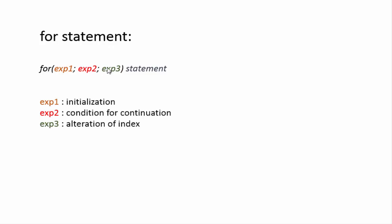After executing the statement, control comes back to expression 3, which alters the index set in expression 1. This helps move to the next pass, where the same procedure is repeated. The loop executes as long as the condition in expression 2 is true. Once this condition becomes false, control is transferred out of the loop. If we omit expression 2, the compiler treats it as true by default, so the loop will continue indefinitely.